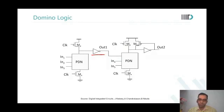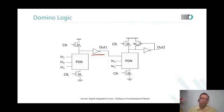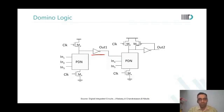This is called domino because until out one goes to one, the second PDN will not evaluate. Only after the first PDN has evaluated will the second PDN evaluate, then the third, then the fourth. That is why it is called domino logic.